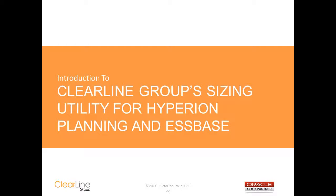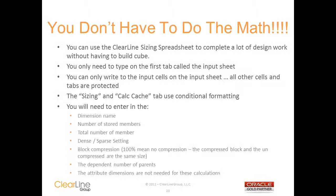The Clearline Group Sizing Utility for Hyperion Planning and S-Base does all the calculations for you so you don't have to remember the details of all the math. The utility is just a three-tab spreadsheet. You just have to enter your cube's information into the white cells on the first tab — all of the other cells and tabs are protected. Just type in the dimension names, the number of stored members, the total number of members per dimension, and the dense and sparse settings. Then enter your estimated block size after compression — 10 or 20% is a good place to start if you're not sure. The last step is to enter the total number of dependent parents, which is 1 plus the total number of alternate rollups in your anchor dimension. This sample does not have any alternate rollups, so we're going to leave it at 1.